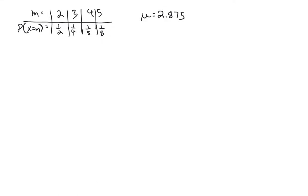Here's the information we need. We have our distribution and we'll use the mean 2.875, since we're looking at the squared distance of each value from the mean. The variance is the expected value of the squared distance: for each point, we take the value minus the mean, square it, then multiply by the probability of attaining that outcome — a weighted average of squared distances.